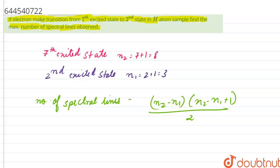Let us substitute the values, N2 is 8, N1 is 3, 8 minus 3, similarly 8 minus 3 plus 1 divided by 2. This is basically 5 into 6 by 2, which is equal to 15. The answer of this question is 15.